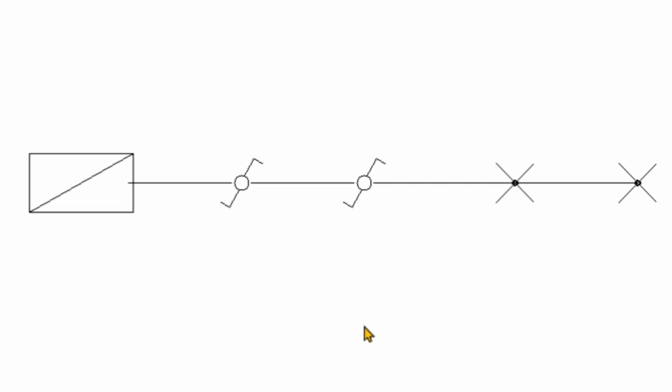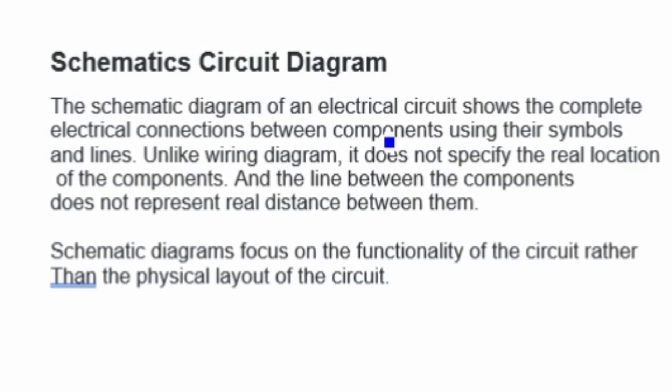Next we have a look at what a schematic diagram will look like. A schematic diagram of an electrical circuit shows the complete electrical connections between components using their symbols and lines. Unlike a wiring diagram, it does not specify the real location of the components, and the lines between components do not represent the real distance between them. Schematic diagrams focus on the functionality of the circuit rather than the physical layout.